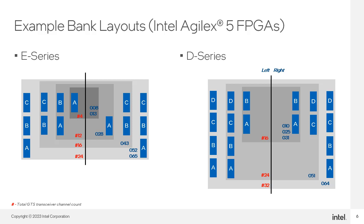On the right side, we see the D series devices, which start with four GTS transceiver banks, two on each side, in the smallest three devices. The 052 has six banks, four on the right and two on the left. The largest density device has four banks on each side.